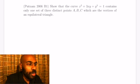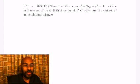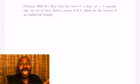Hey, welcome to today's video. I'm Prof Omar. Today we're going to look at this problem which asks: show that the curve x cubed plus 3xy plus y cubed equals 1 contains only one set of three distinct points A, B, C which are vertices of an equilateral triangle. And the problem actually also asks to find the area of that triangle, so we're going to do that in this problem.